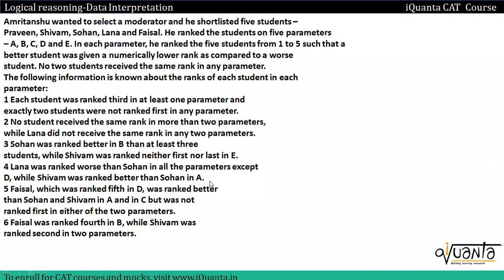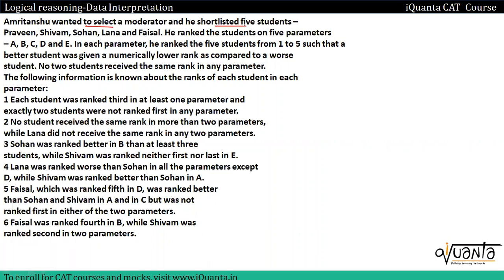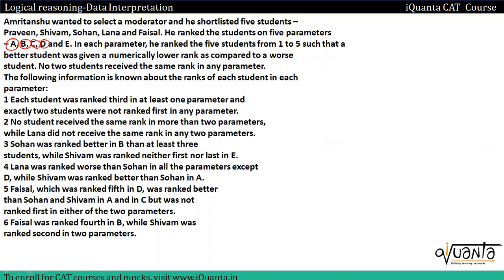Hi everyone. In this video we will understand how to solve this type of set. In this set, Amrit Tanshu wanted to select a moderator and shortlisted five students: Praveen, Shivam, Sohan, Lana, and Fazal. He ranked them on five parameters A, B, C, D, E. In each parameter he ranked the five students from one to five, where a better student was given a numerically lower rank. No two students receive the same rank in any parameter.